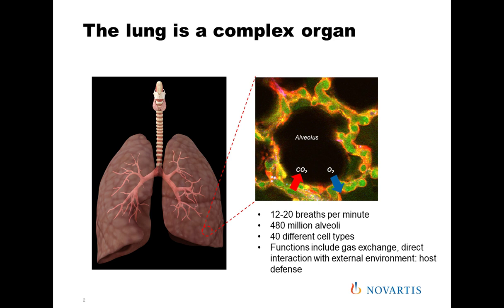First of all, the lung is a highly complex organ, uniquely evolved to support its primary functions, in terms of gas exchange. You can see from this image — a fluorescent micrograph of an alveolus — the red fluorescence is the endothelial surface. It's a very thin barrier, highly evolved to provide a minimum distance for oxygen and CO2 to diffuse across and enable gas exchange, ensuring and maintaining tissue oxygenation throughout the body.